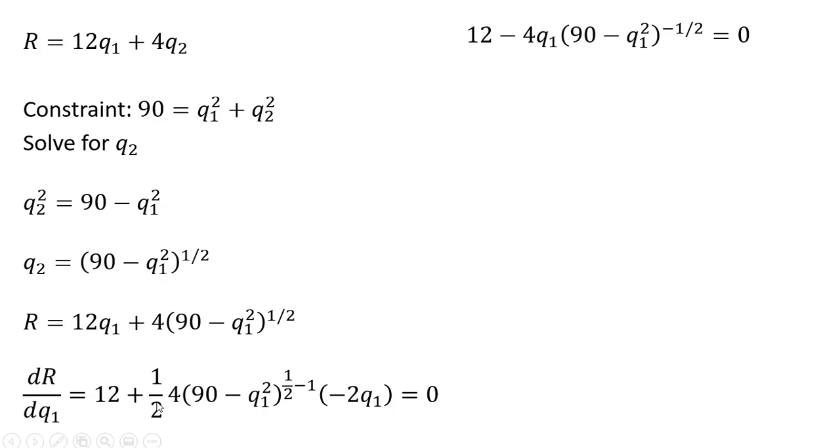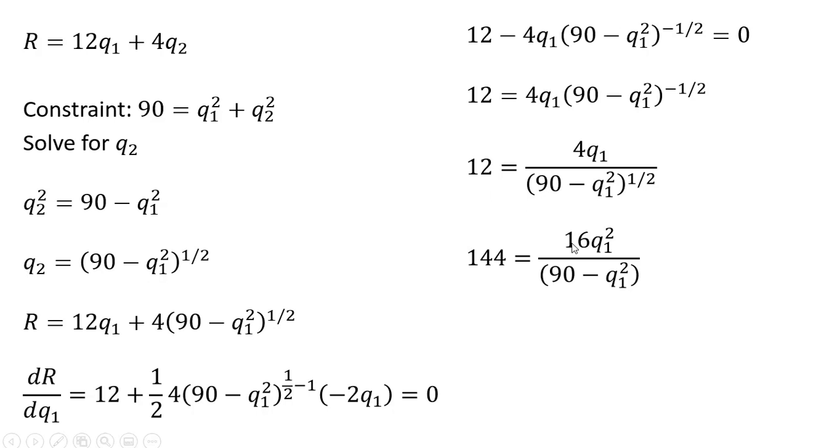So simplifying here a little bit, 1 half times 4 is 2. And that 2 multiplied by minus 2q subscript 1 is where that minus 4q subscript 1 is coming from. Now just moving some things around. Following the rules of exponents, we're going to take what's in parentheses and move that into the denominator. And now we're going to square both sides. So squaring everything here leaves us with this result.